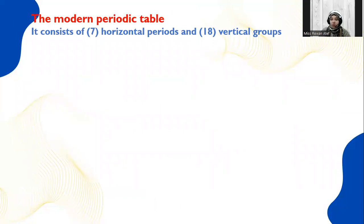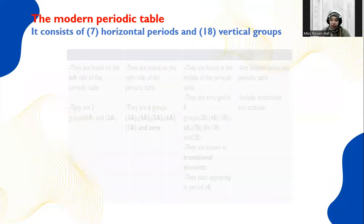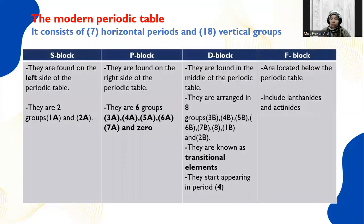The modern periodic table consists of seven horizontal periods and 18 vertical groups. These elements are arranged in four blocks. The first block is S block, located on the left side of the periodic table, and it contains two groups: group 1A and group 2A.